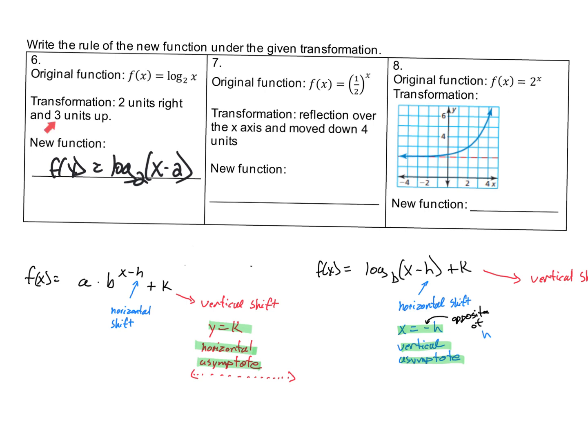Then it says 3 units up. The plus k is the vertical shift, so I'll just put plus 3 on the end. That would be the new function based on the given transformation: f(x) = log₂(x - 2) + 3.